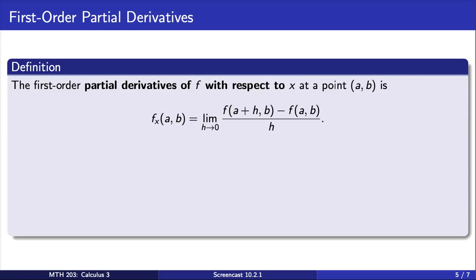The first order partial derivative of f with respect to x at a point (a,b) is defined by the following limit. This is the first derivative of f with respect to x while holding y constant.